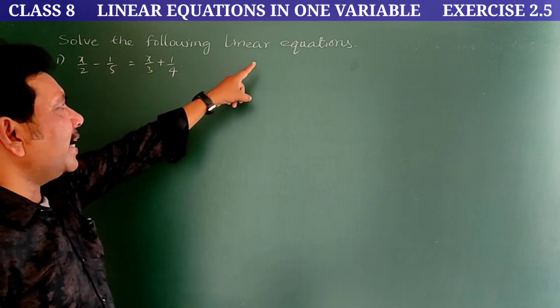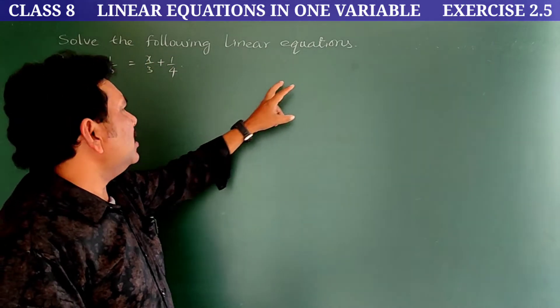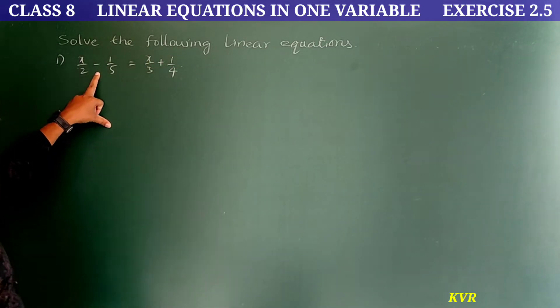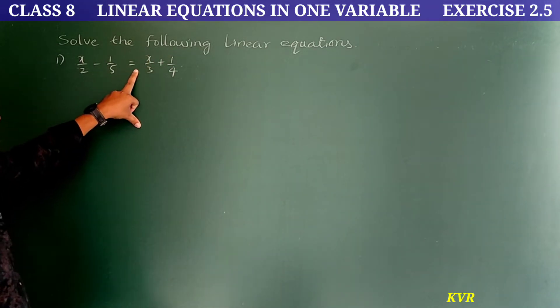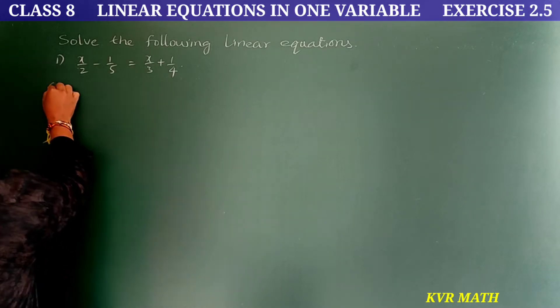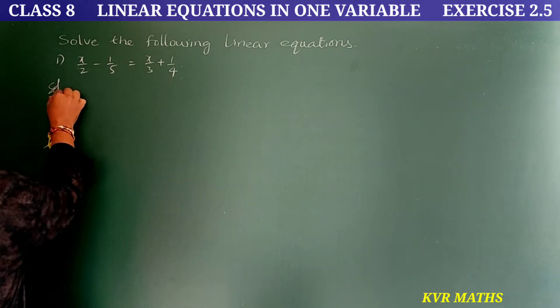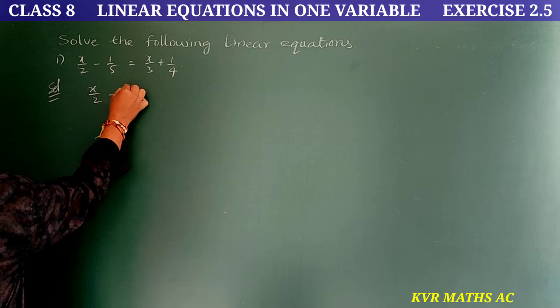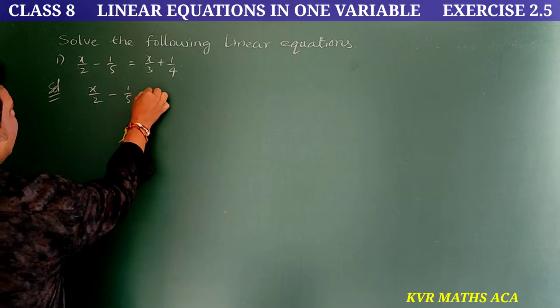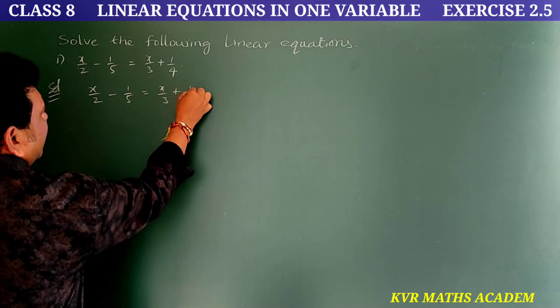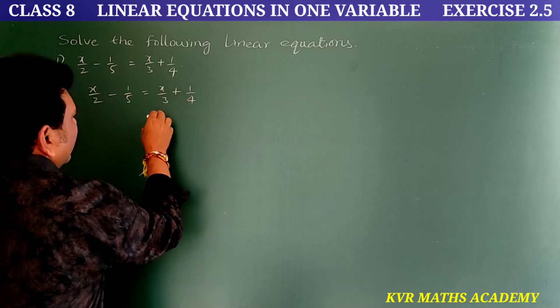Solve the following linear equations. First one: x/2 - 1/5 = x/3 + 1/4. Solution — the given equation is x/2 - 1/5 = x/3 + 1/4.